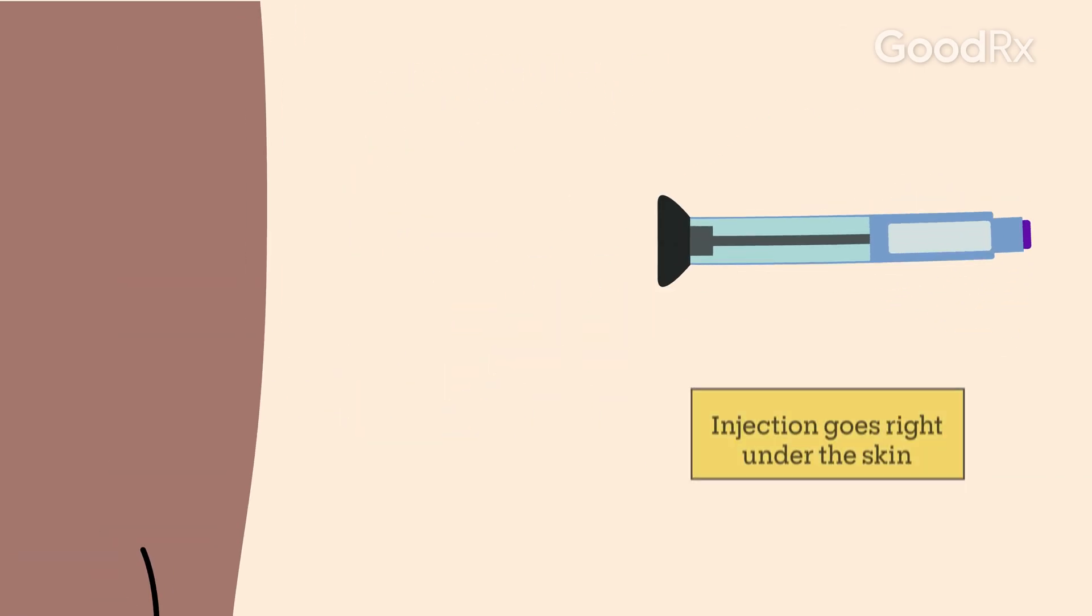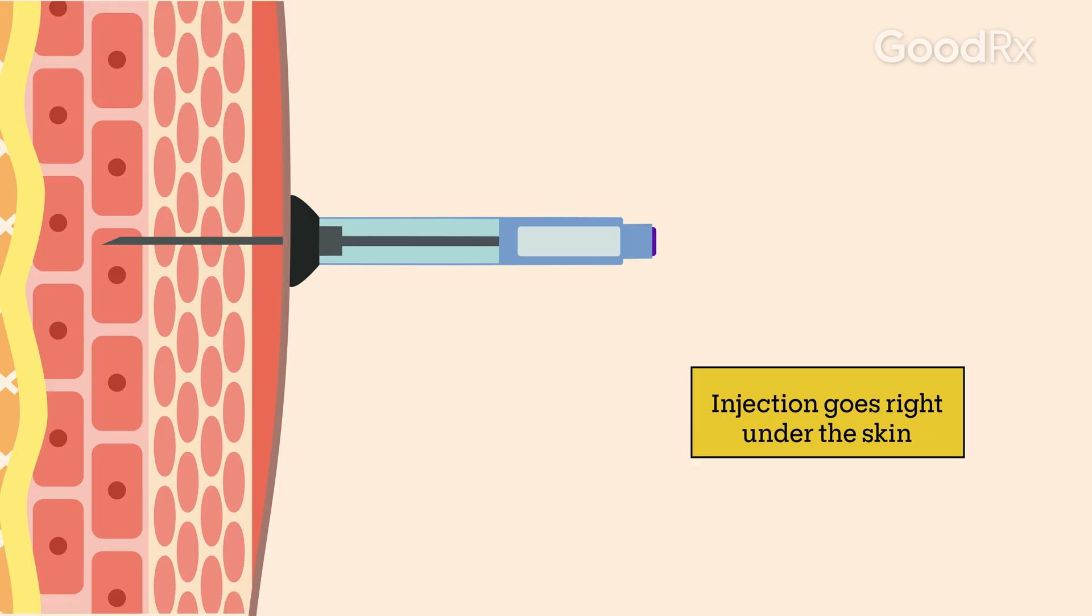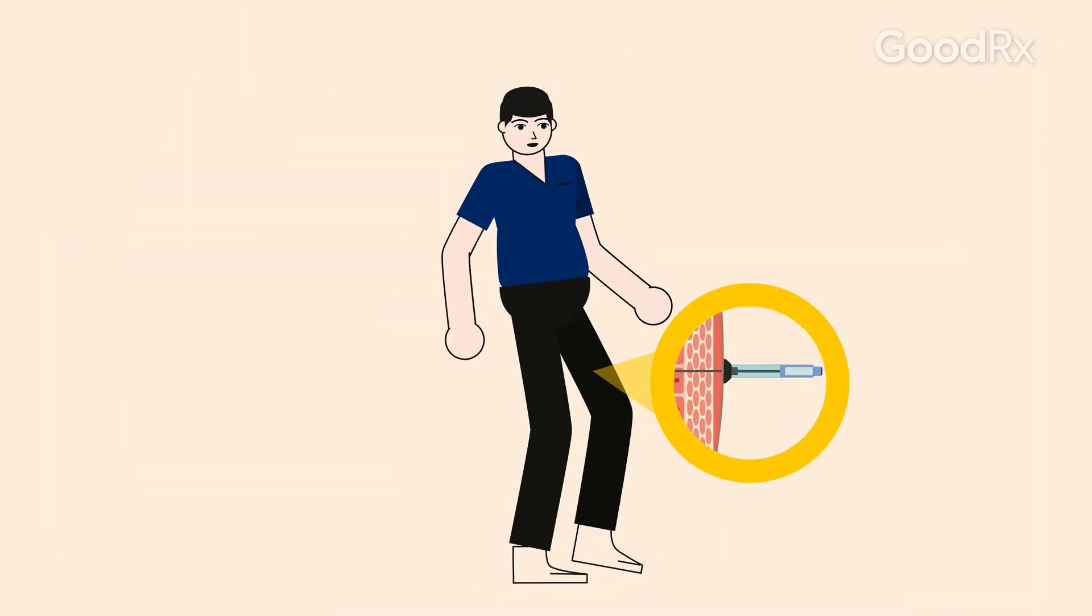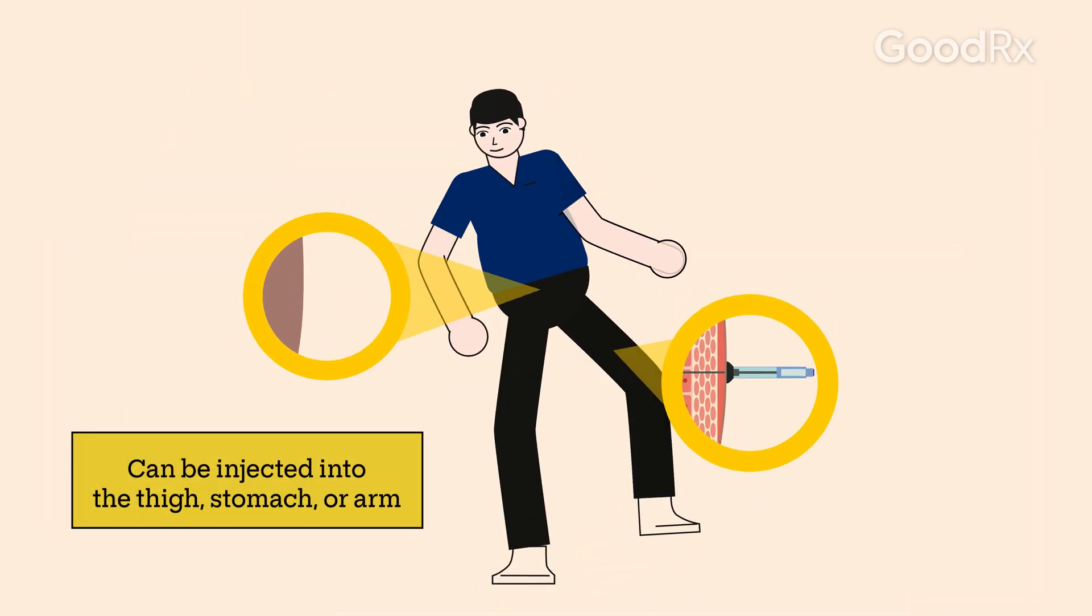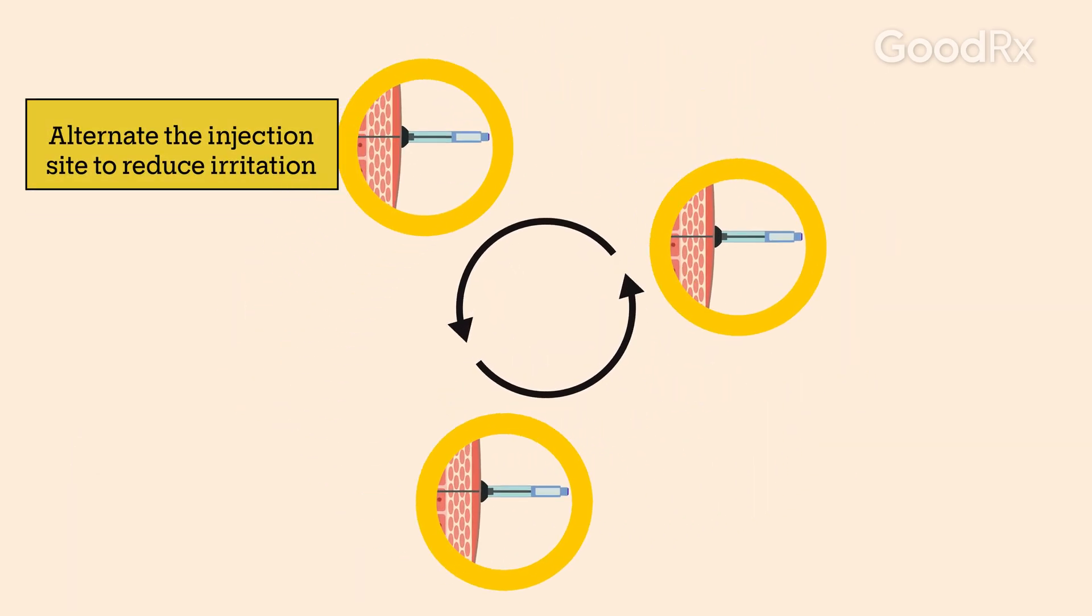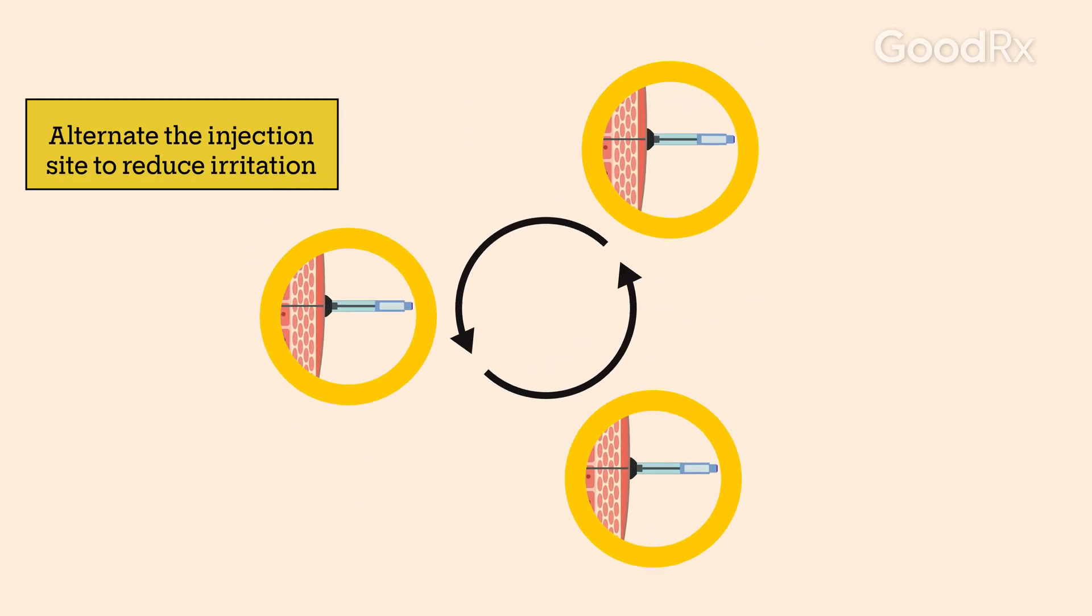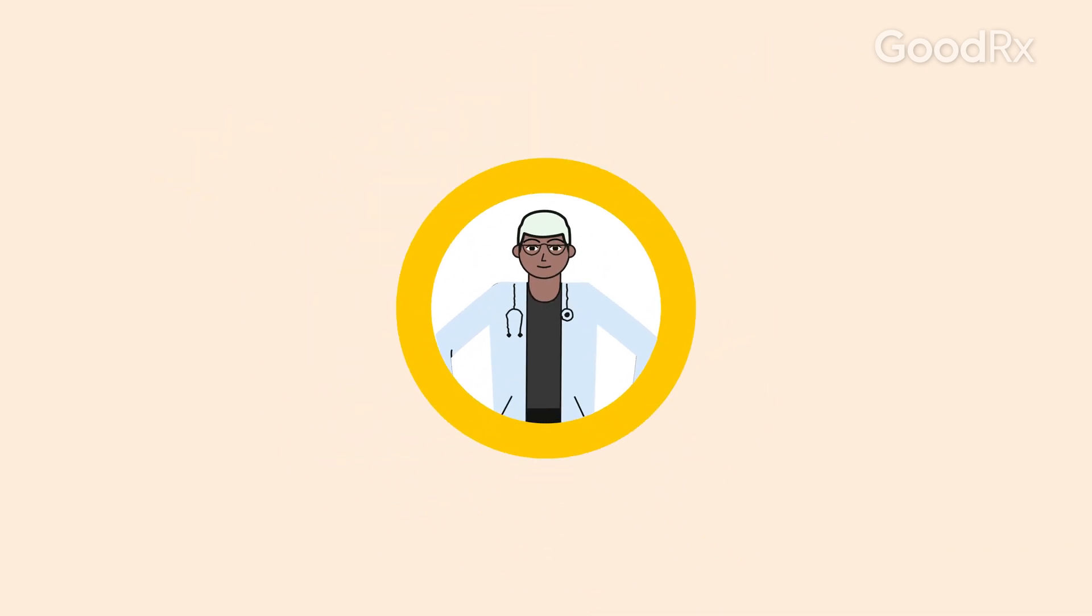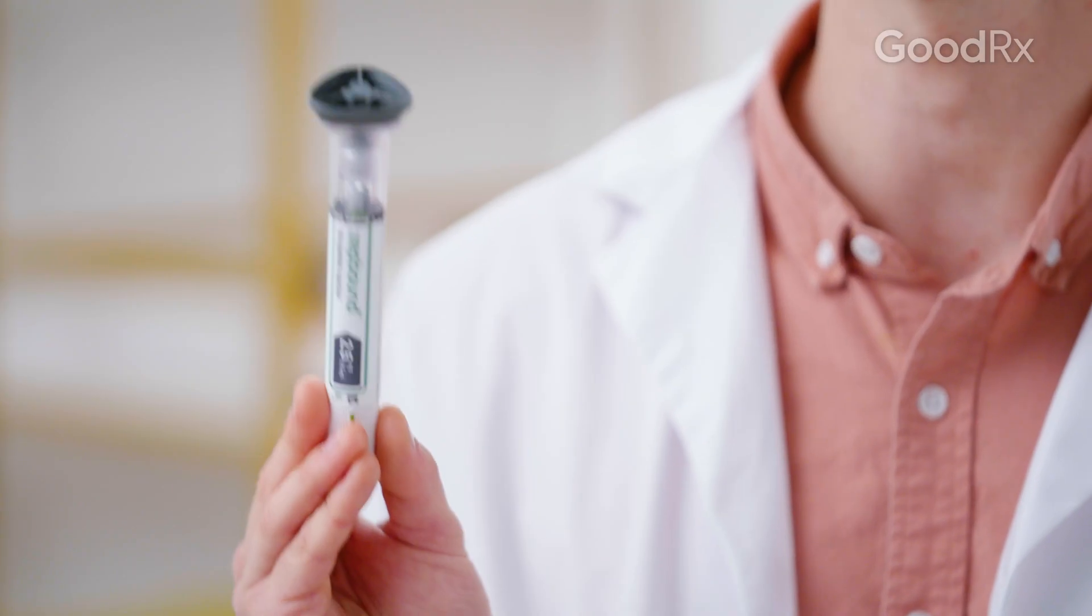The injection goes right under the skin, so it's not as deep as most vaccines. You can inject it into the thigh, lower stomach, or upper arm, and you should choose a different area each time to reduce irritation. Your care team will train you on how to self-inject ZepBound. This medication comes in an easy-to-use, single-dose, pre-filled pen.